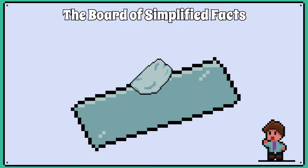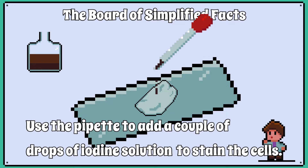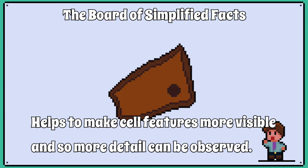You then place the epidermis onto a glass slide. Using a pipette, we add a couple of drops of iodine solution to stain the plant cells, which should make the cell features more visible and more details can be seen.